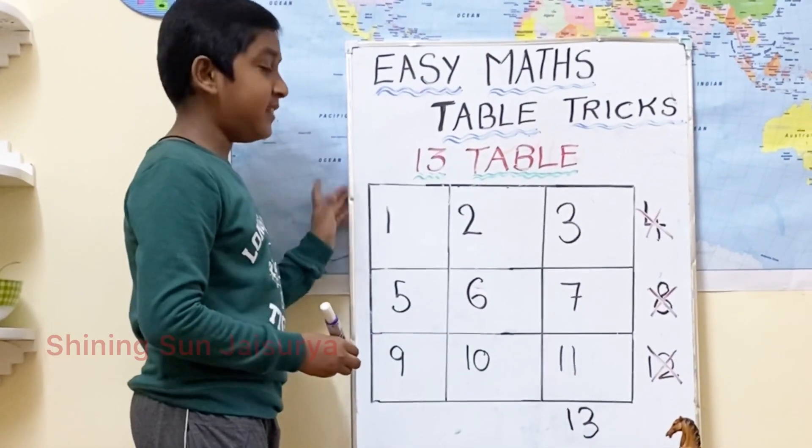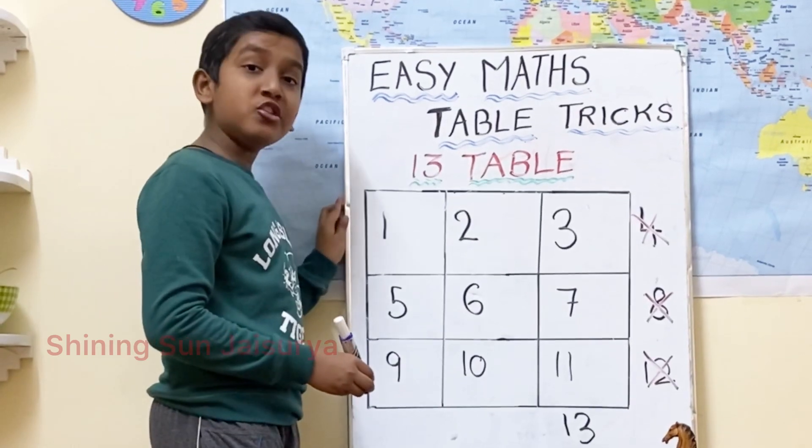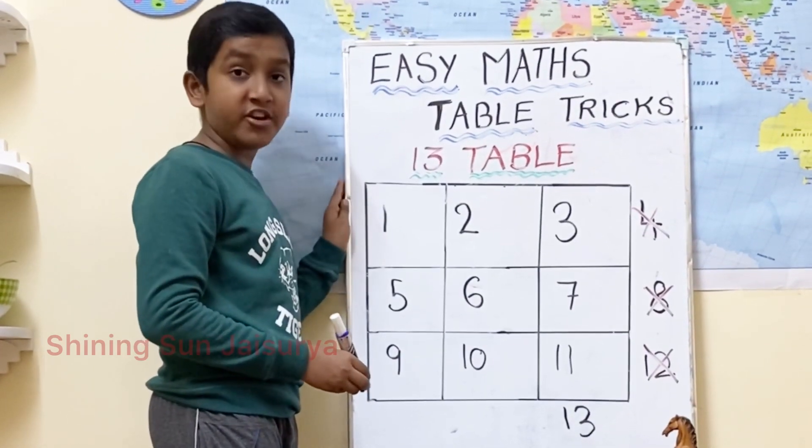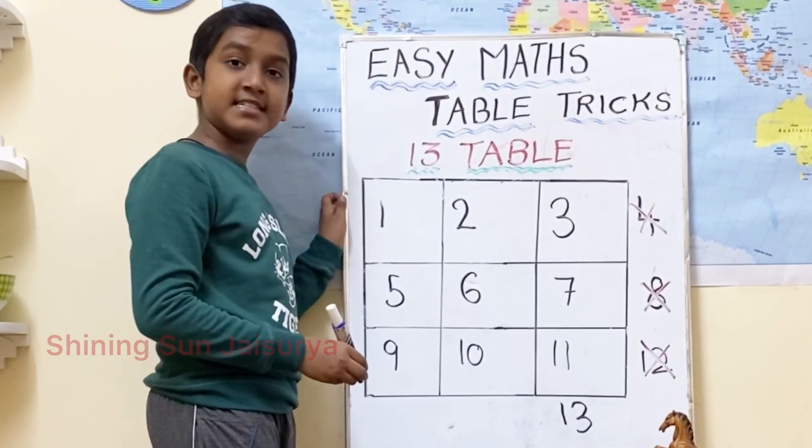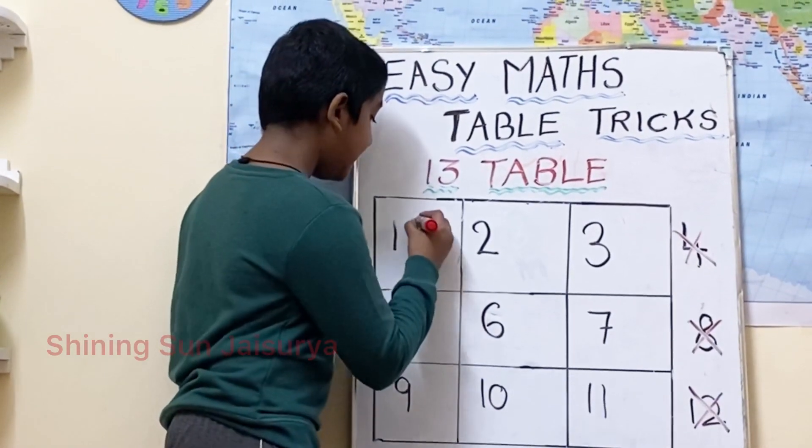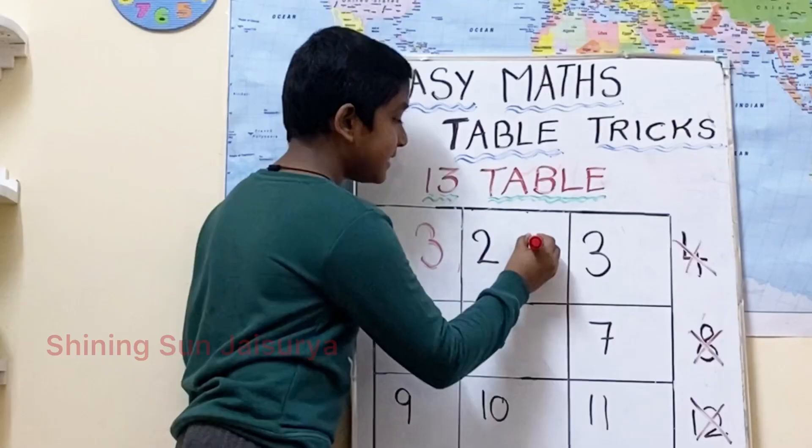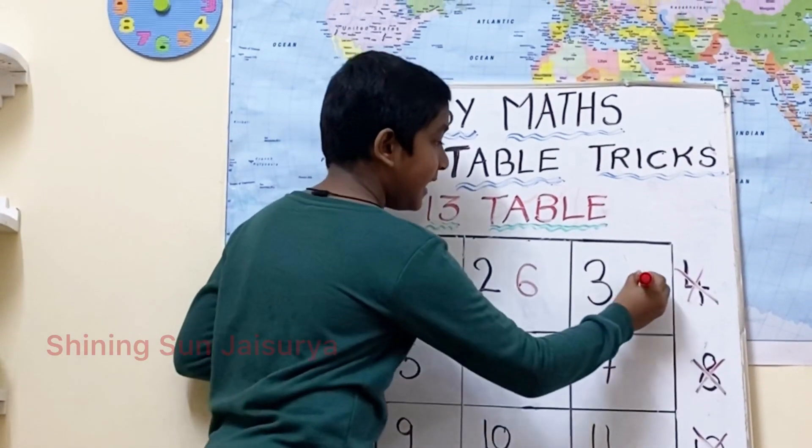Now let's write the 1's place. For 1's place, we have to write 3 tables. Those who are new for 3 table tricks, you can find the link in description box. Now let's add the 1's place. That is 3 tables. 3, 6, 9.